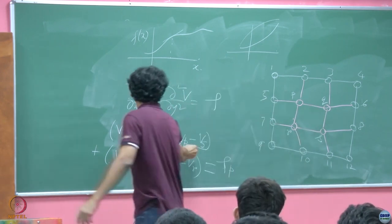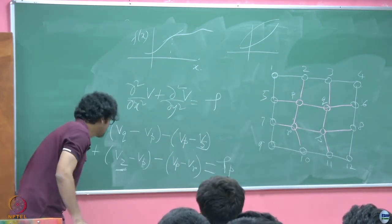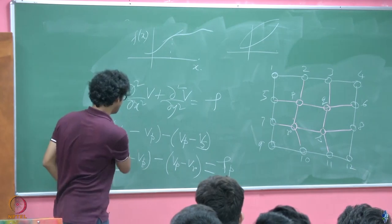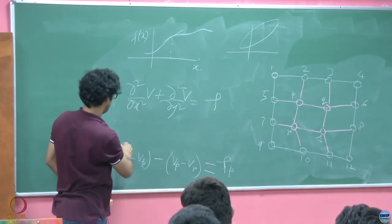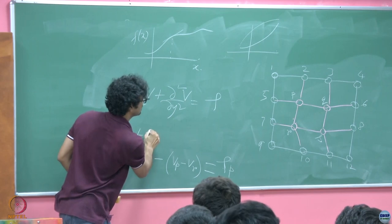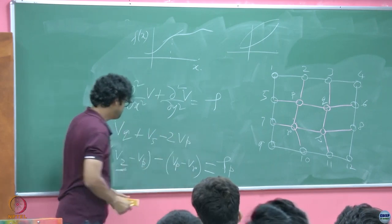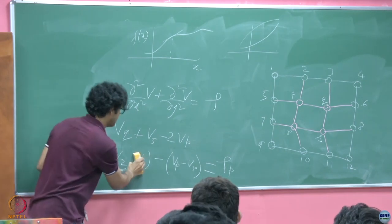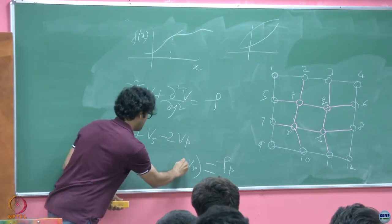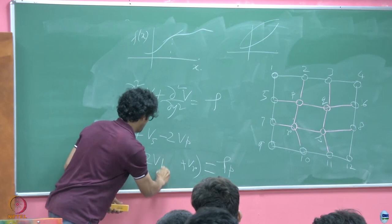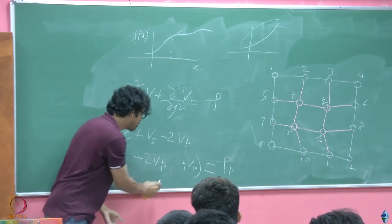So that is what this second difference is. In fact, if I write this in a compact fashion, I would have V_Q plus V_5 minus 2 V_P and this also I can write minus 2 V_P. That is generally the pattern.